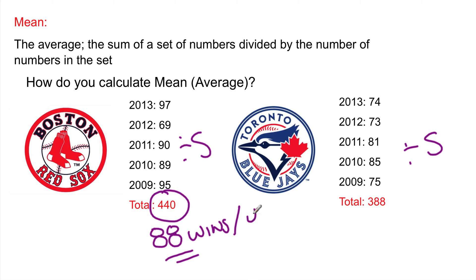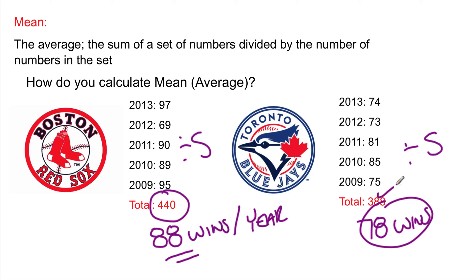That's their average win total per year. What about your Toronto Blue Jays? Obviously it's going to be lower since the total is lower, but how much lower? How much better per season have the Boston Red Sox been than the Toronto Blue Jays? They go 388 divided by 5 equals 77.6, so we'll say on average they have 78 wins per season. That's 77.6 rounded up to 78. So the Red Sox have been better by 10 wins a season on average since 2009. That's how you apply using average.